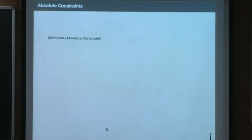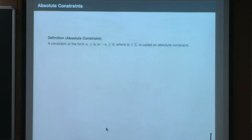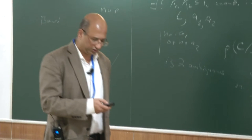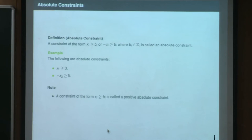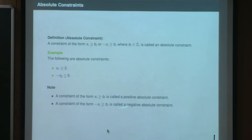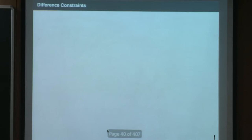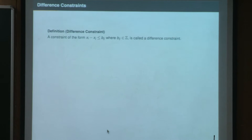An absolute constraint has the form x_i ≥ b_i or x_i ≤ b_i. For the rest of the talk, we assume the right-hand side is always integral. We distinguish between positive and negative absolute constraints. The next class of constraints are called difference constraints, also called separation constraints: of the form x_i − x_j ≤ b_ij.